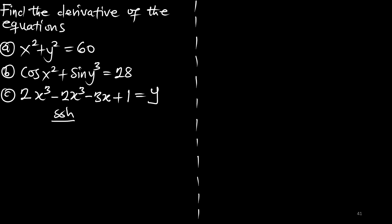Our first example is: x squared plus y squared equals 60. We have an equation involving both x and y, and we are going to differentiate. This is an implicit differentiation, so right away we will apply the derivative to the terms.